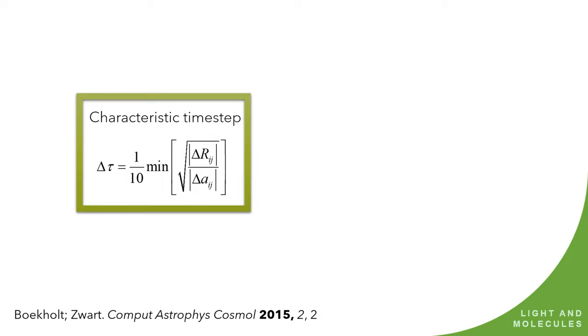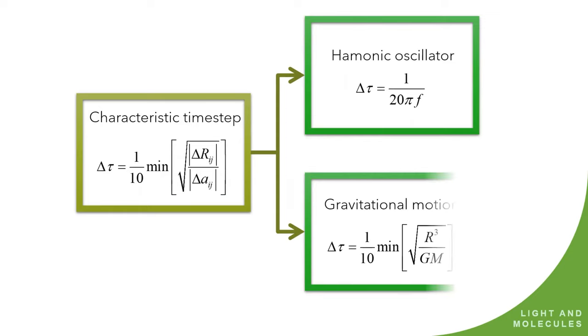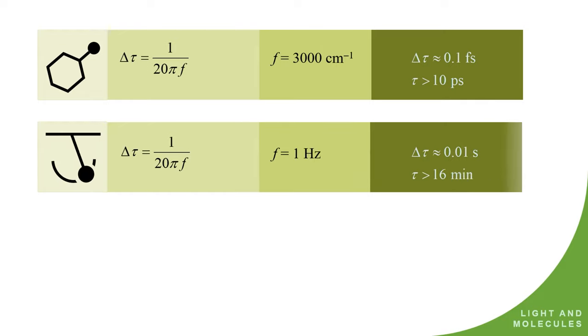And the characteristic time step for integrating the Newton equation is given more or less by this equation here. It's one-tenth of the minimum of this function of delta R divided by delta A. This delta R is the relative distance between the pair of nuclei. Delta A is the relative acceleration between them. And if you apply this equation to a monoatomic molecule, this is going to give me 1 over F, 1 over the frequency. Or if you apply that for gravitational motion, that's going to give you something that depends on the mass of the system.